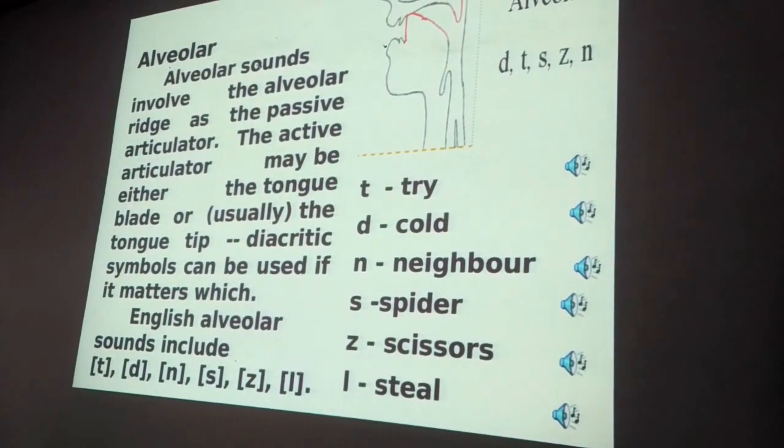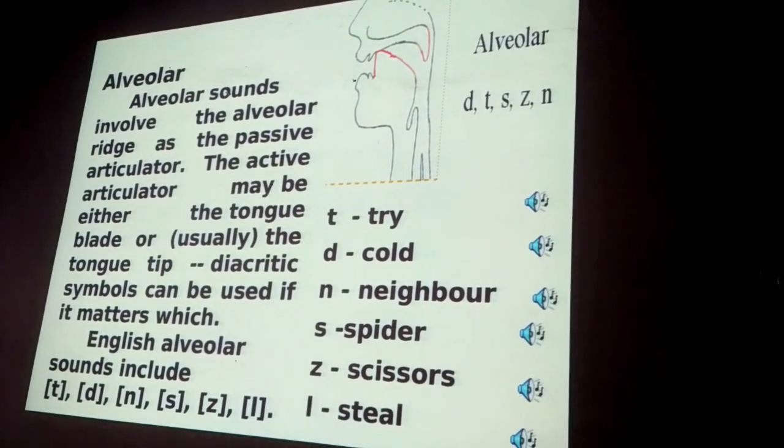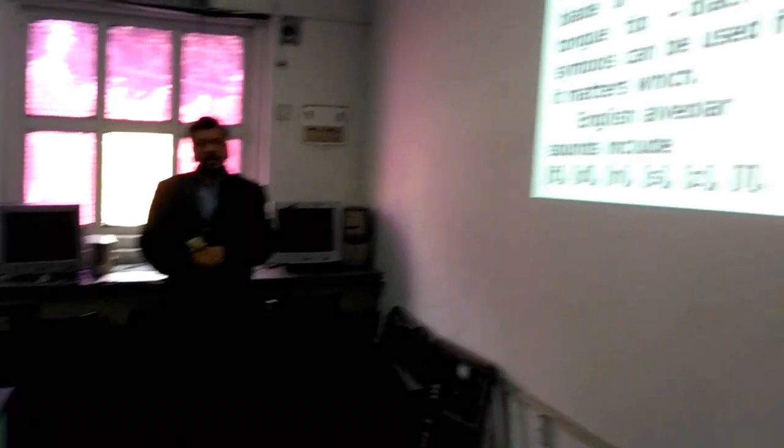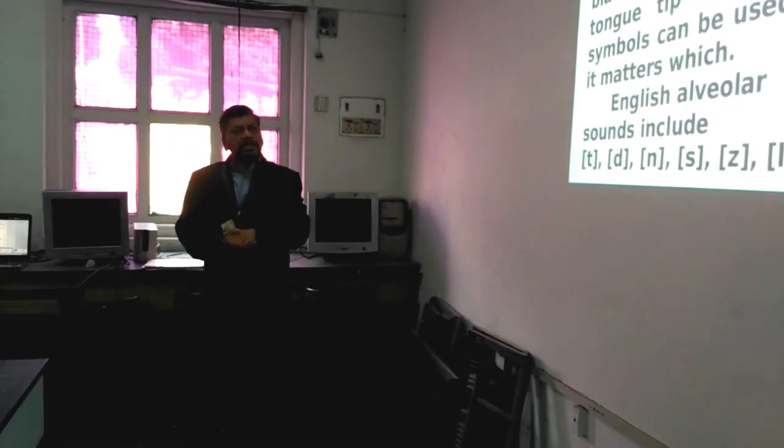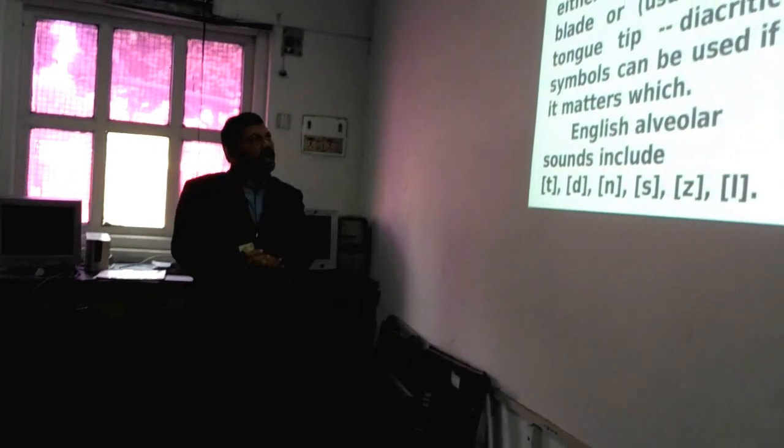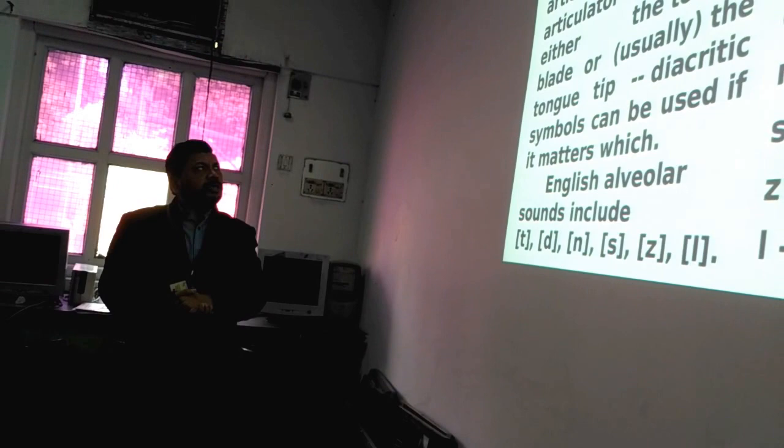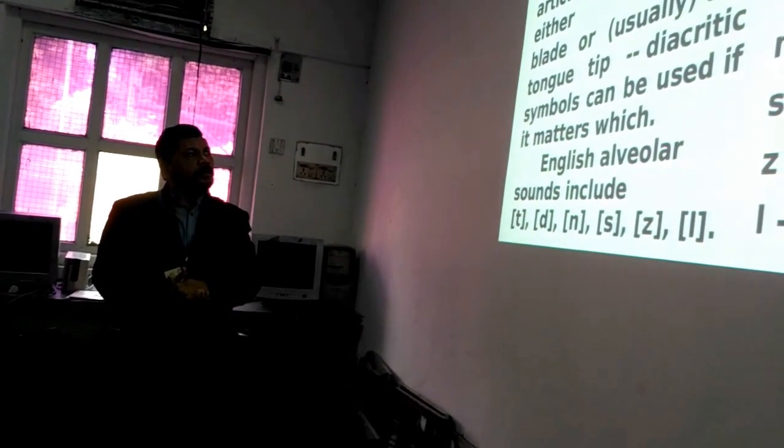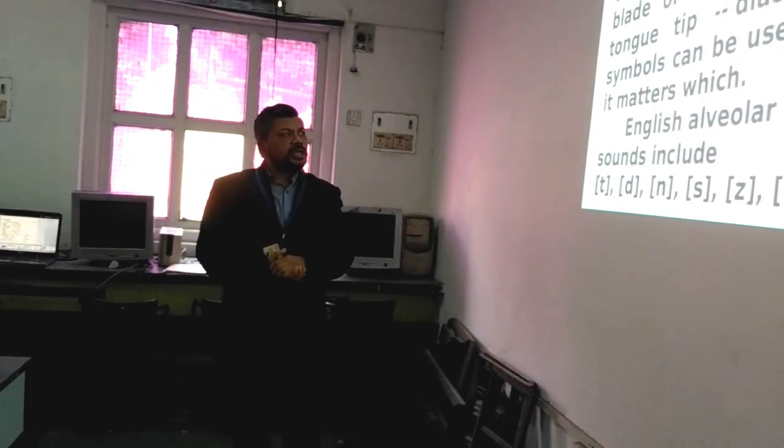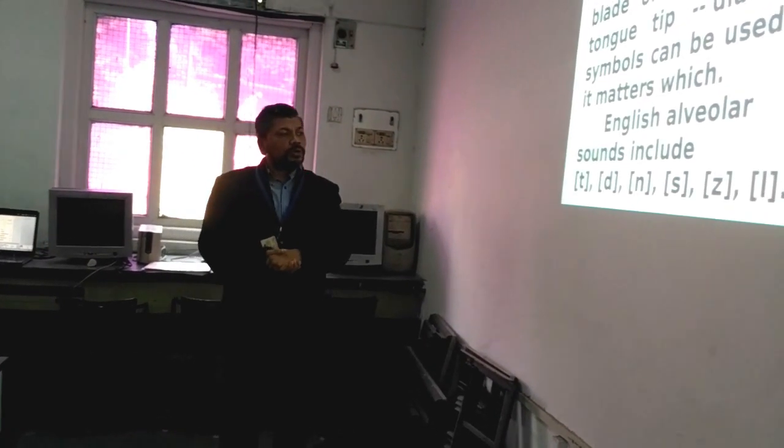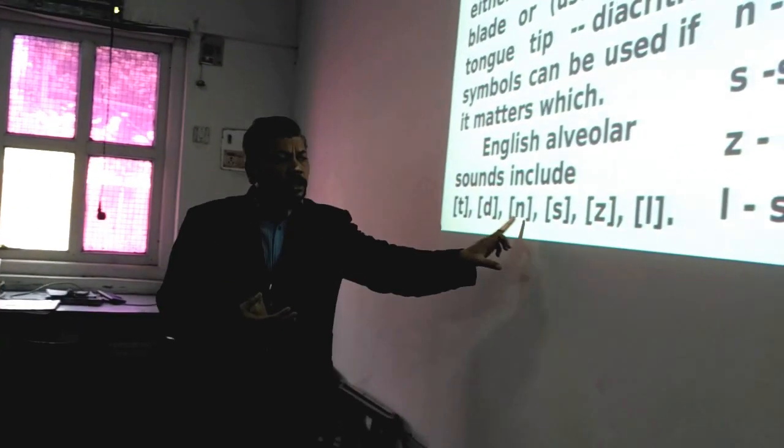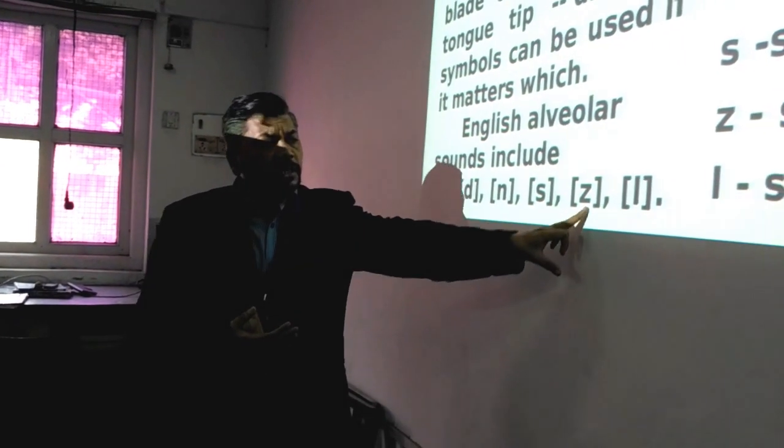Here comes the alveolar sound. Alveolar sounds include T, D, S, Z, L, and N. Alveolar sound involves the alveolar ridge as the passive articulator. The active articulator may be either the tongue blade or the tongue tip. Diacritic symbols can be used if it matters with English alveolar sound.